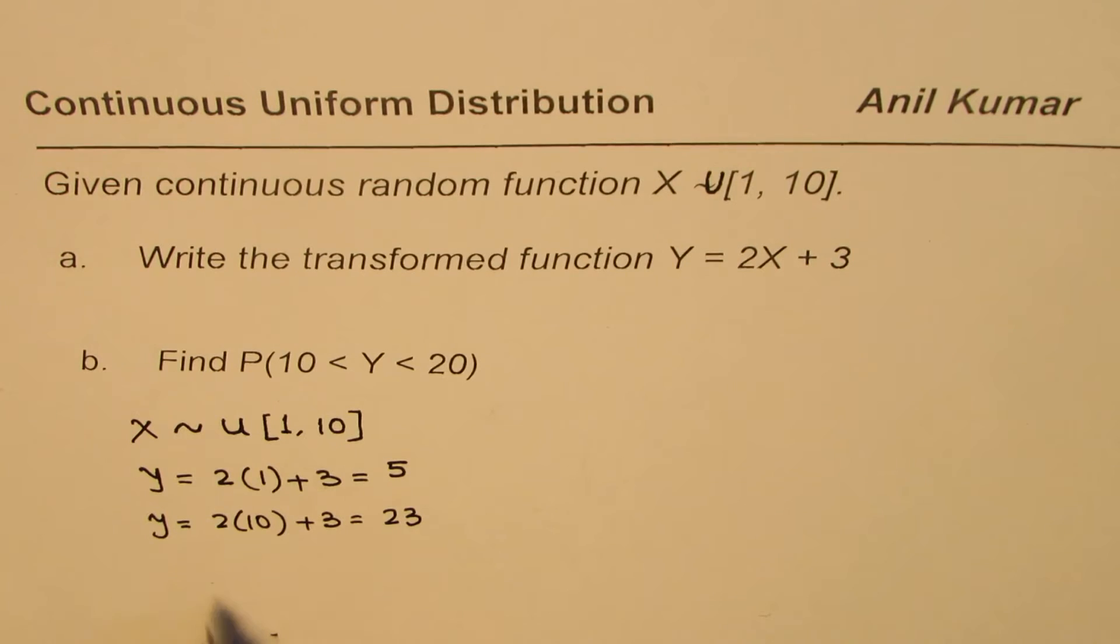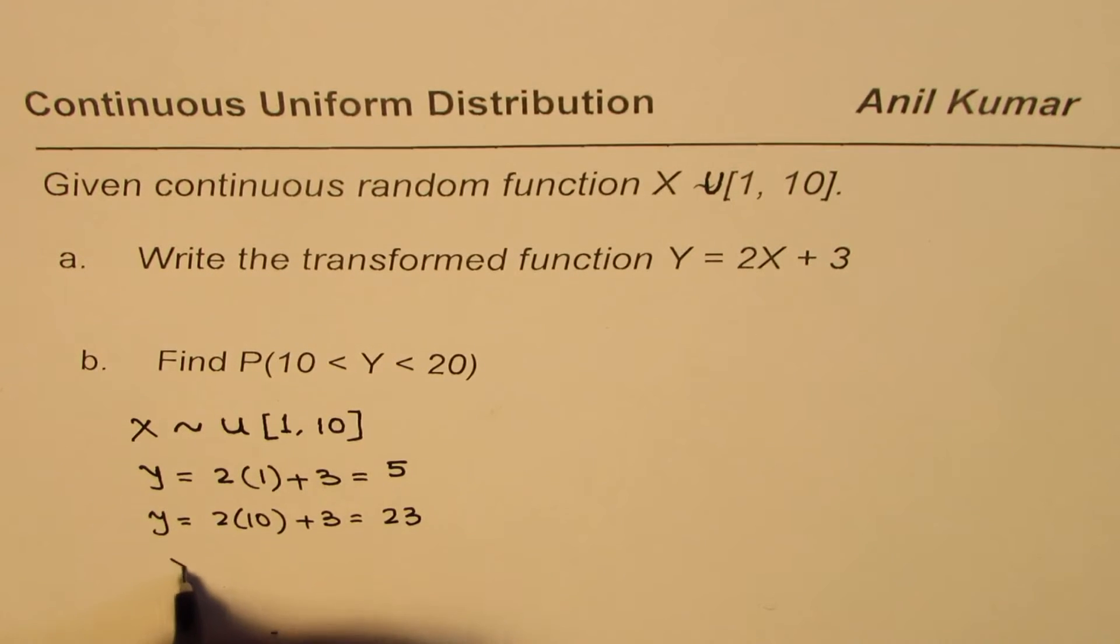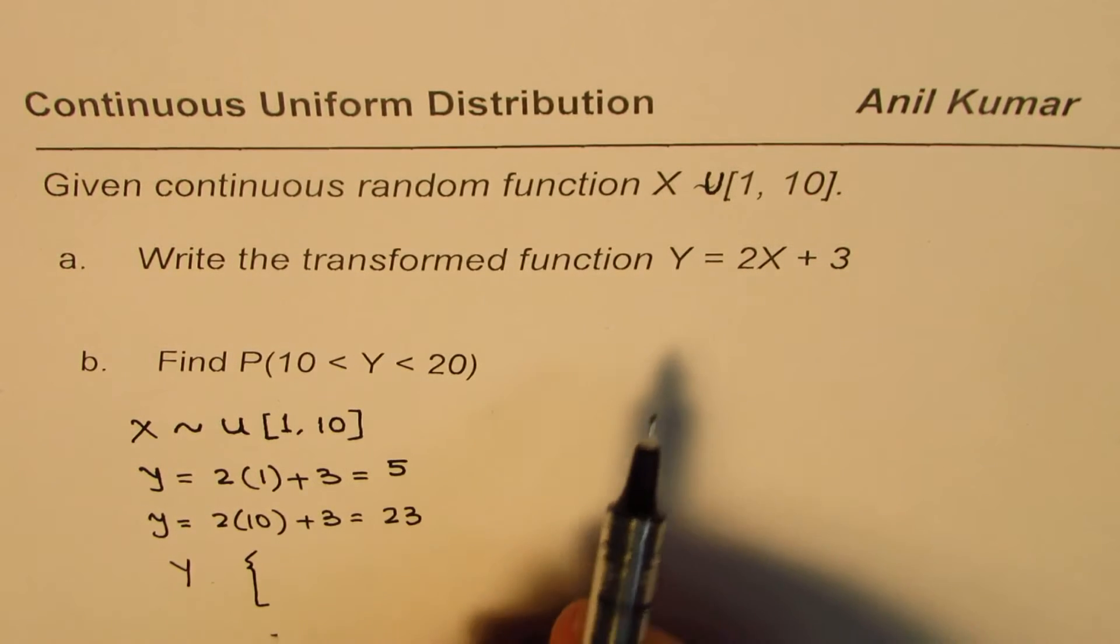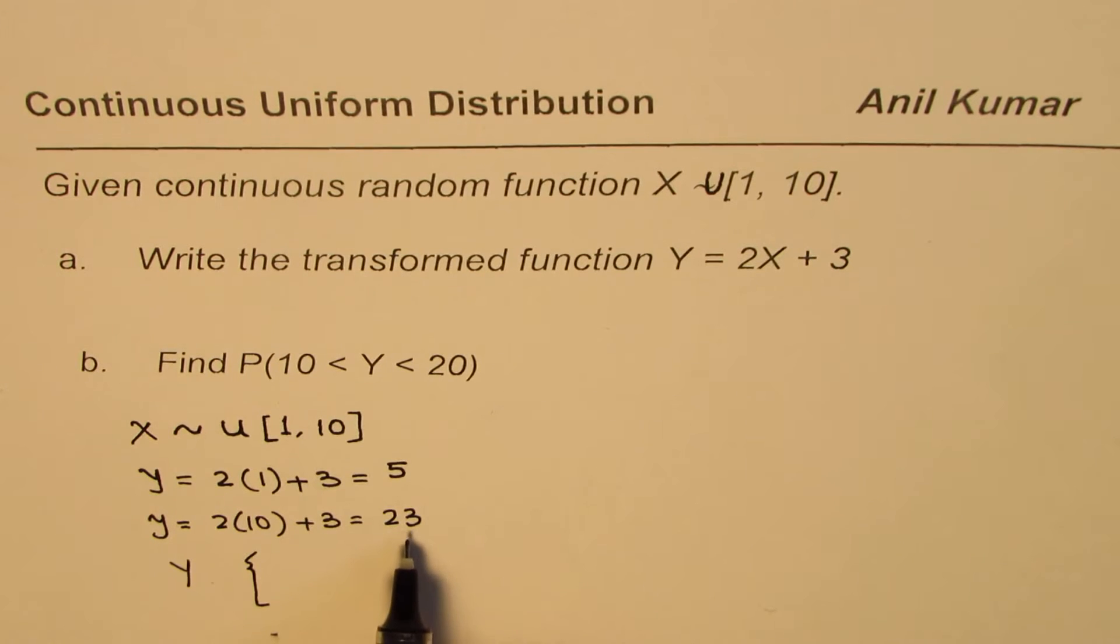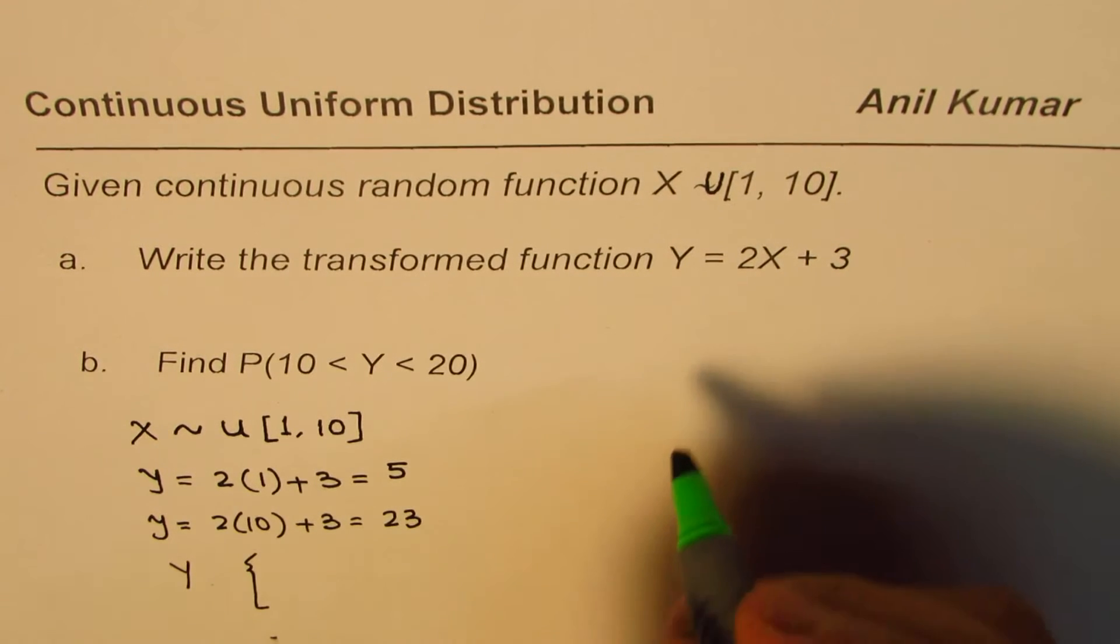So that gives us the function Y. So Y could be defined as the function whose value will be defined between this interval 5 to 23, right? And what is going to be the value? We need to figure that out.